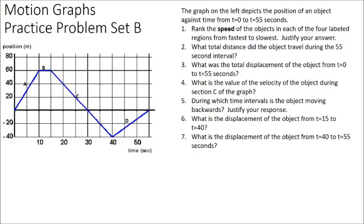Our second set of problems looks at a position-time graph. We're looking at the graph of an object as it moves from 0 to 55 seconds. The first question asks us to rank the speed of the objects in each of the four labeled regions from fastest to slowest. When we have a position-time graph and want to know the velocity, we take the slope of the curve. Speed is velocity without taking direction into account, so we find average velocity in each time interval by finding the slope.